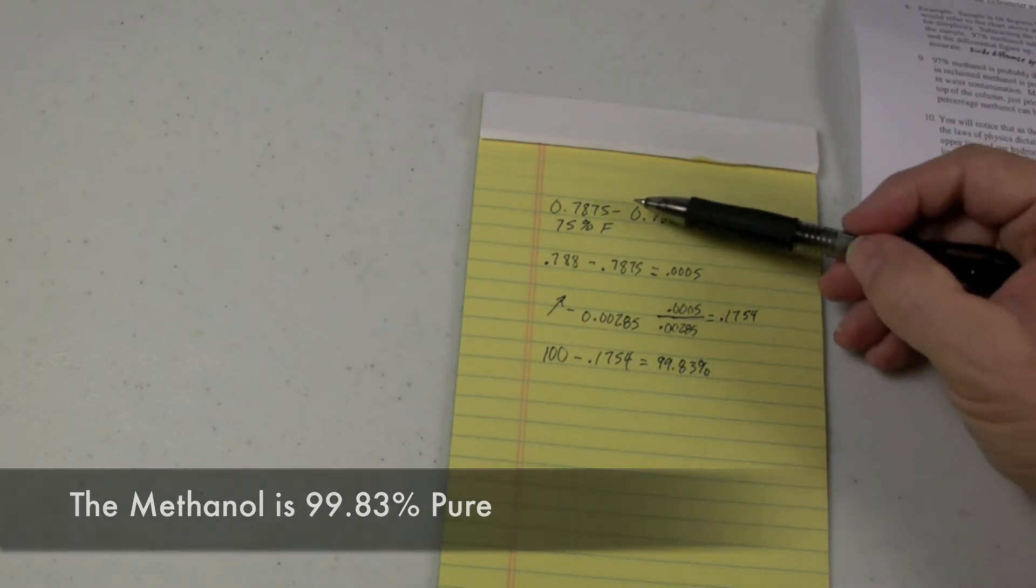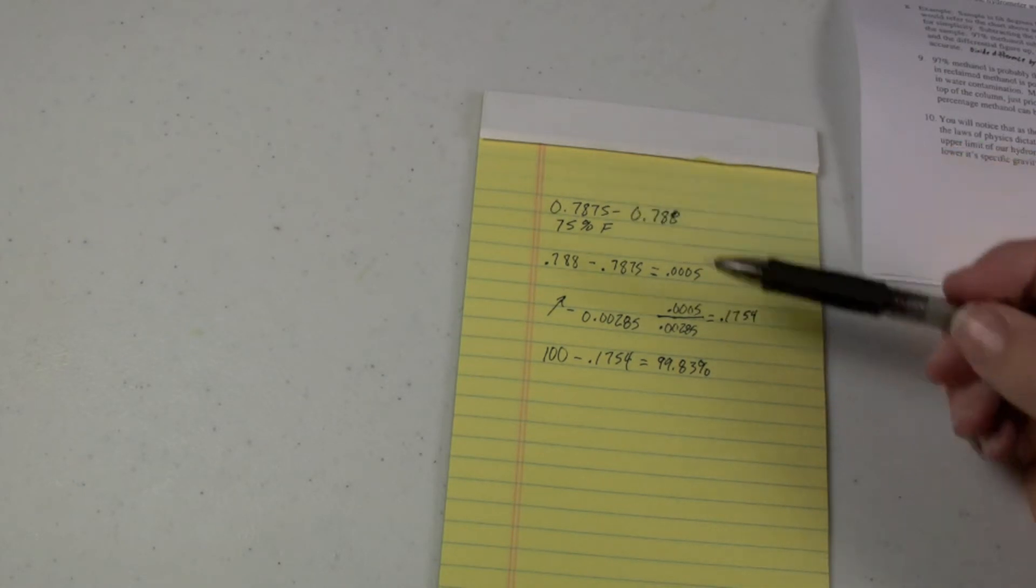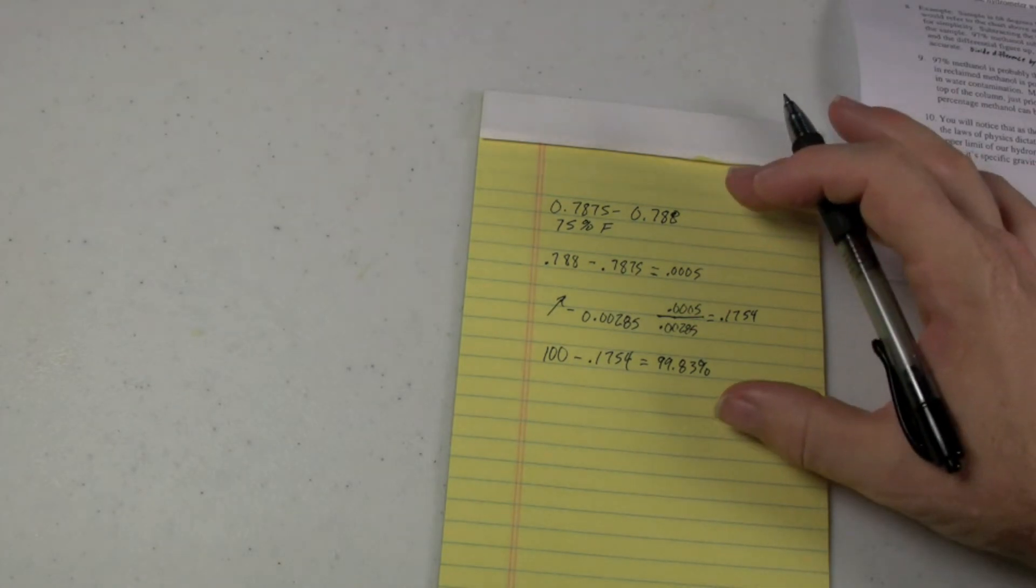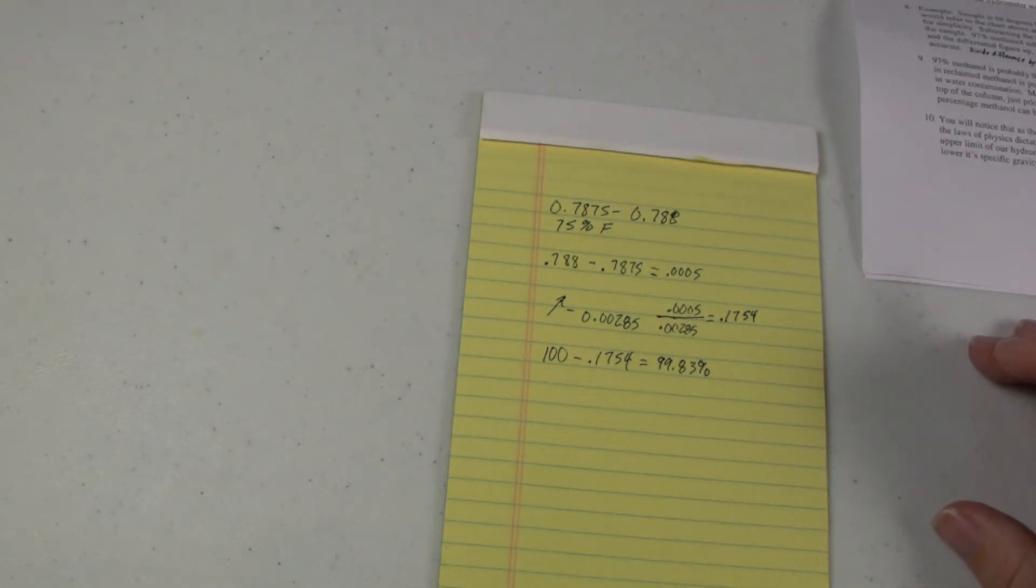In reality, we were closer to this number, so we're probably pretty darn close to being absolutely pure, 99.9% pure. But that's how you calculate methanol with a methanol test kit.